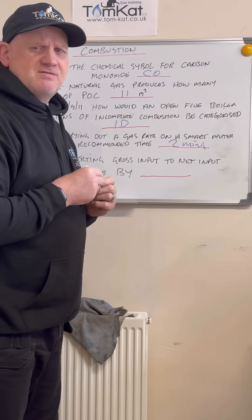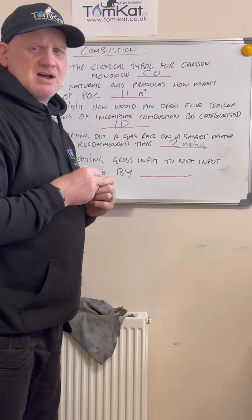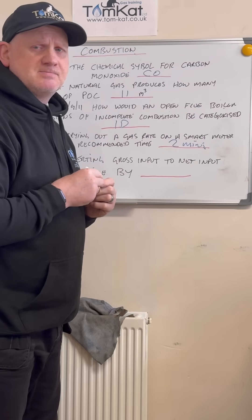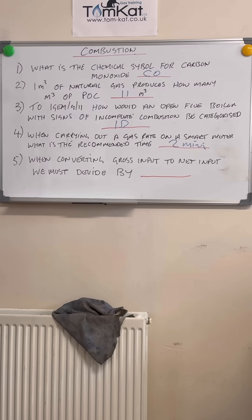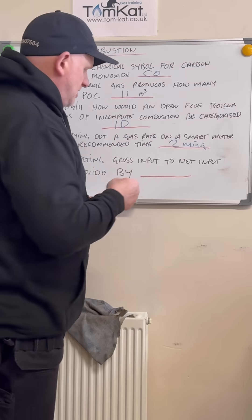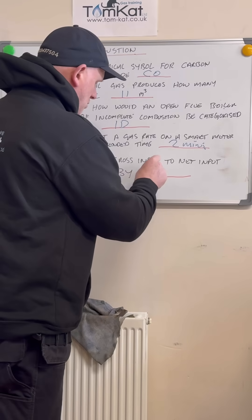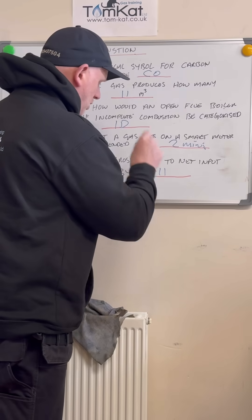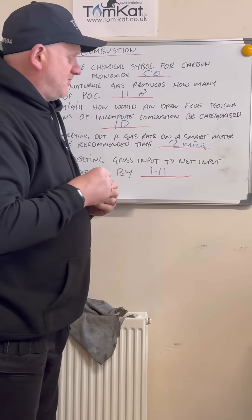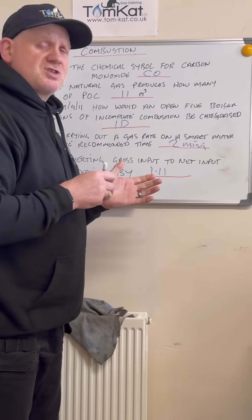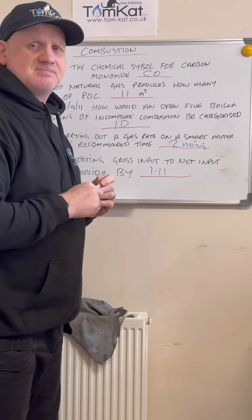Question five and halfway there. When converting gross input to net input, we must divide by — hopefully you said 1.11 — because that's how we convert gross to net for natural gas.